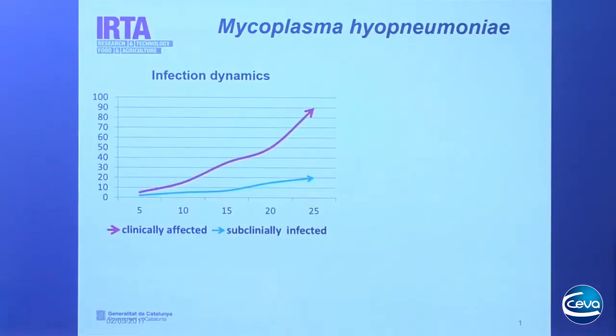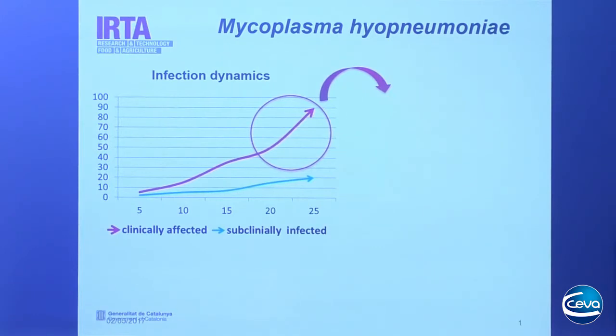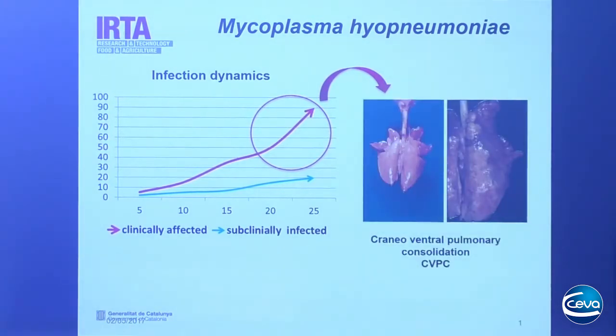I'm going to talk about the relevance of Mycoplasma strain diversity and its impact in the field. At the farm level we can face different situations regarding Mycoplasma hyopneumoniae infection. We can find farms where the percentage of infected pigs begins at early stages of the production cycle and increases over time until animals show the typical dry non-productive cough attributable to Mycoplasma.